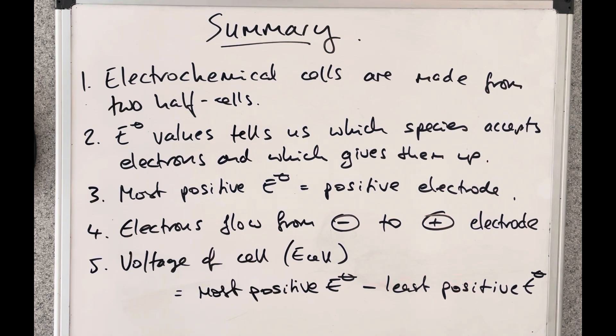The electrons will flow from the negative electrode, so the least positive standard electrode potential, to the positive electrode. And finally the voltage of the cell, or E cell for short, is calculated by taking the most positive standard electrode potential and subtracting from it the least positive standard electrode potential.